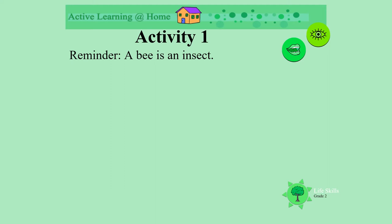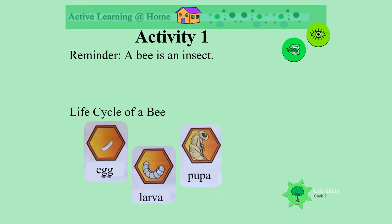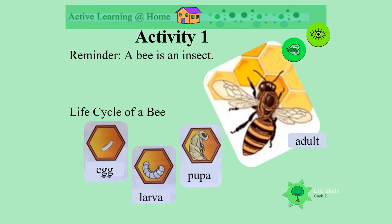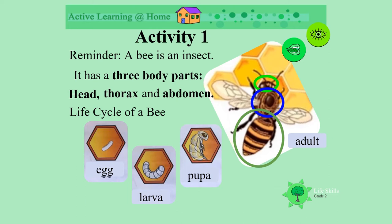Can you remember? A bee is an insect. What is the life cycle of a bee? There are eggs, then they hatch into a larva, it grows into a pupa, and then we have the adult bees. A bee has three body parts: a head, a thorax and an abdomen. Well remembered.